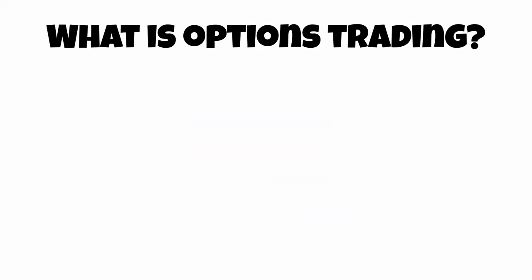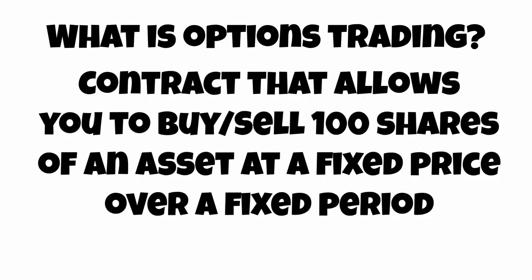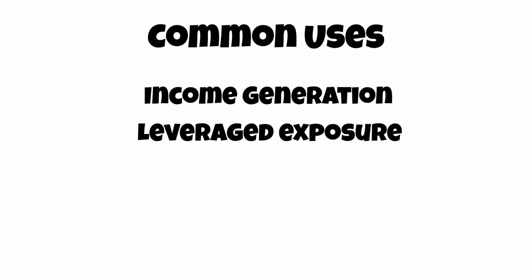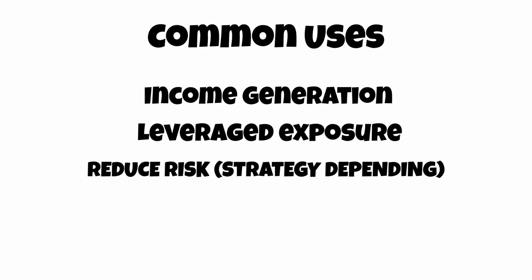To put it simply, options contracts are purchasable assets that give you the right but not the obligation to buy or sell 100 shares of an underlying asset at a set price on or before a specified date. Common uses for options trading include income generation, leverage, and to try to reduce risk.